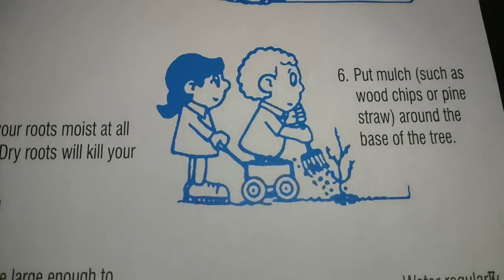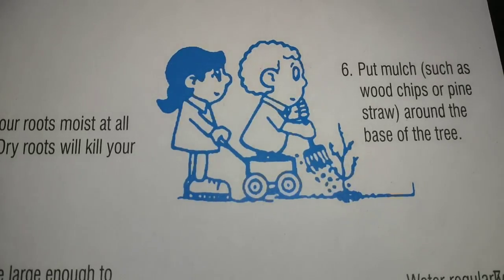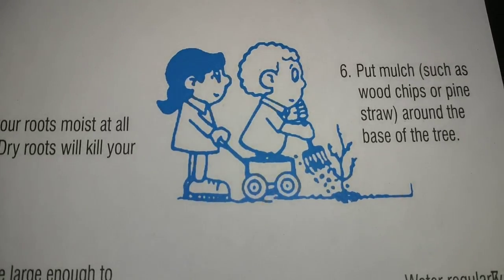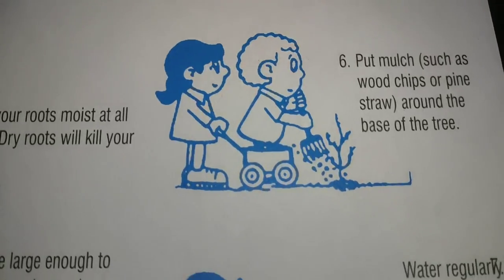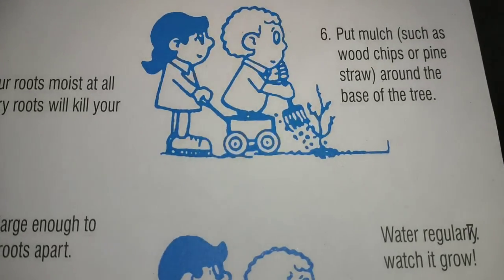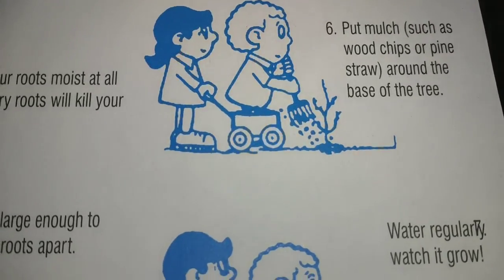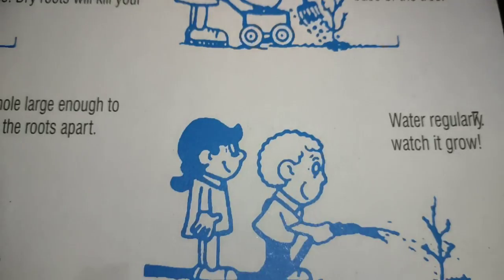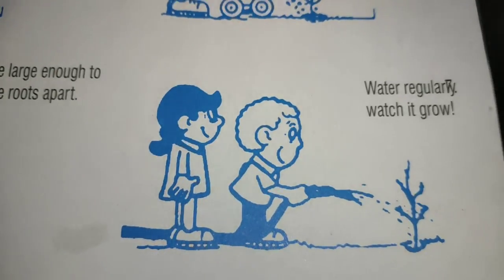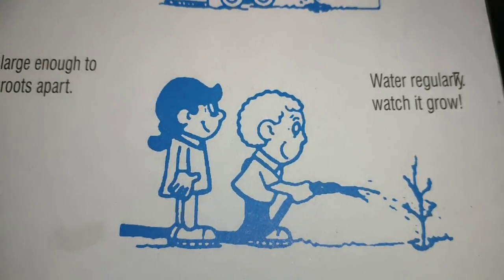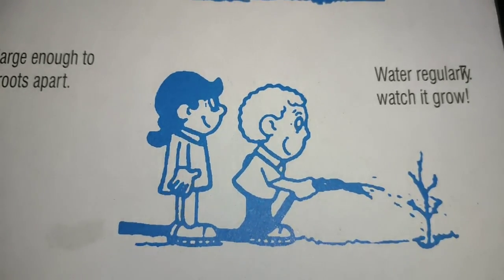The fifth step is: add more soil and firm it with your foot. The sixth step is: put mulch — such as wood chips or pine straw — around the base of the tree, then water regularly and watch it grow.